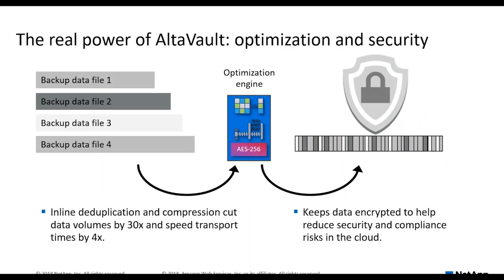Some of the features of AltaVault include in-flight encryption, and it does dedupe and compression inline so it takes the data, crunches it, and writes it in a really efficient format out to AWS. This helps save on the amount of storage that actually needs to be stored in the cloud. One of the use cases we'll talk about — a customer called King County — they saw efficiencies of 70-to-1. They basically saw a 70-to-1 data reduction by using AltaVault to write to the cloud. It's all built-in technology that you really don't need to do anything to enable.